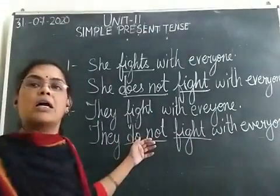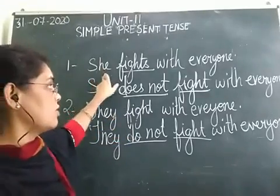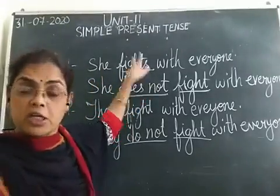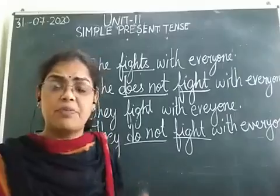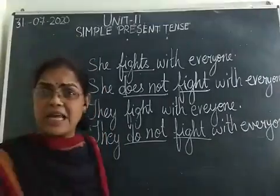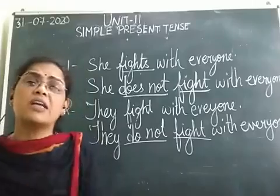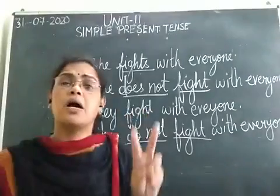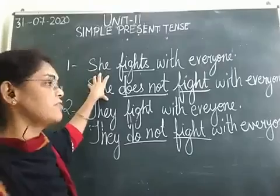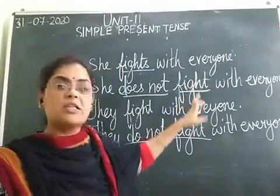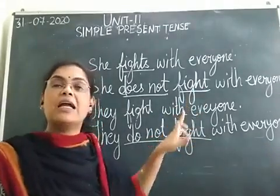To change a simple present tense sentence into negative, remember two words: 'do not' and 'does not.' If the subject is singular, use 'does not.' If the subject is plural, use 'do not.' And remember: the verb is always written in its root form in negative sentences — never add S or ES to the verb in a negative sentence.